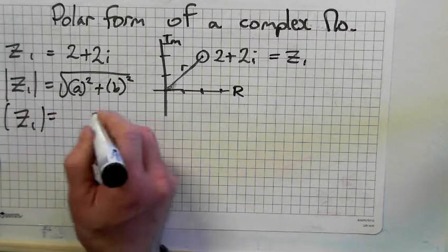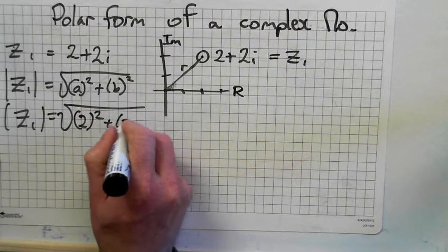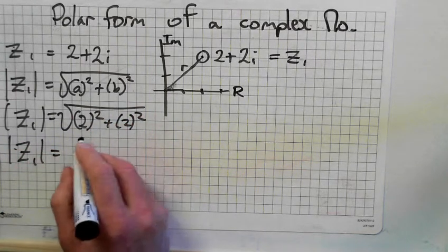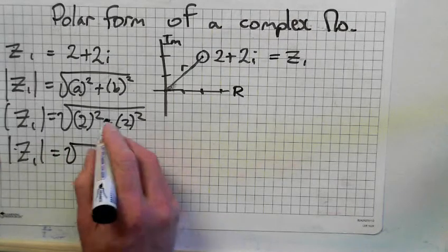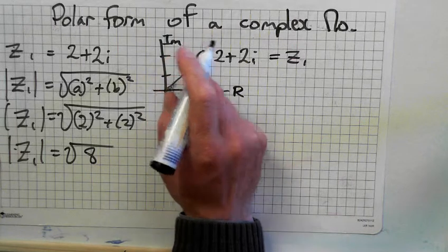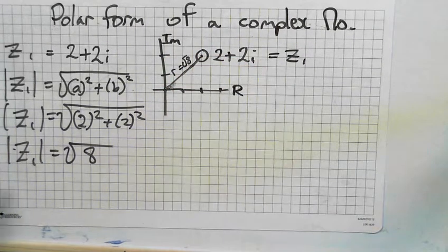Z1 modulus is equal to square root of 2 squared plus 2 squared. Z1 is equal to square root of 4 plus 4, which is the square root of 8. So r, the distance here, is square root of 8.